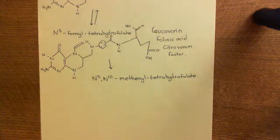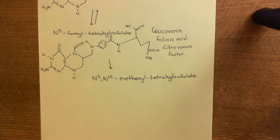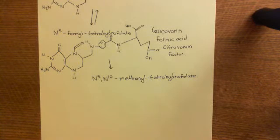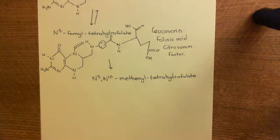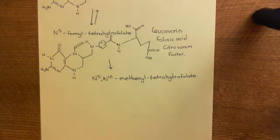Welcome to this next video in which we're discussing the mechanism of action of methotrexate. We're now trying to understand why giving leucovorin, or folinic acid, or citrovorin factor, or N5-formyl-tetrahydrofolate — these four names that are all for the same molecule — why giving that molecule can protect peripheral normal cells from the toxicity of methotrexate.